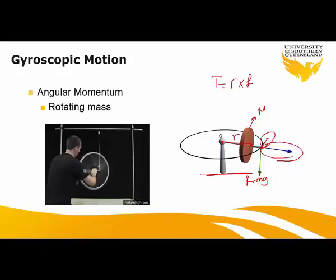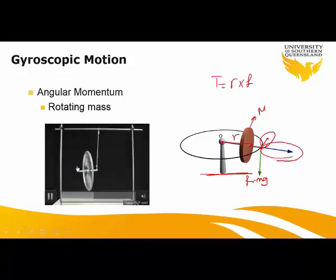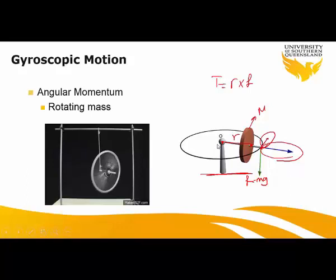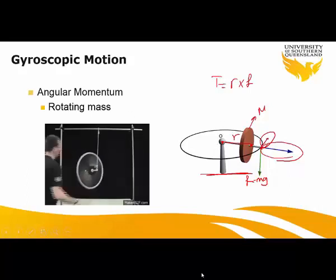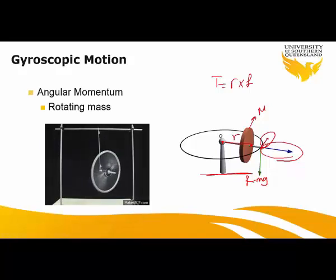Now consider what happens if the heavy disk is rotated around its axis at high speed. If you spin the wheel fast and then release your hand, you will see that it rotates around its pivot point O. The angular momentum causes the wheel to rotate around O in a sustained manner. This phenomenon is called gyroscopic precession, and this concept can be applied to the gyroscope to explain how it works in an inertial navigation system.